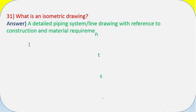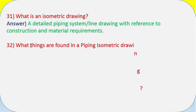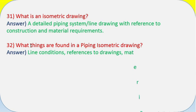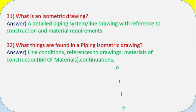Question 31: What is an isometric drawing? Answer: A detailed piping system/line drawing with reference to construction and material requirements. Question 32: What things are found in a piping isometric drawing? Answer: Line conditions, references to drawings, materials of construction, bill of materials, continuations, orientation, piping and drawing details and notes.